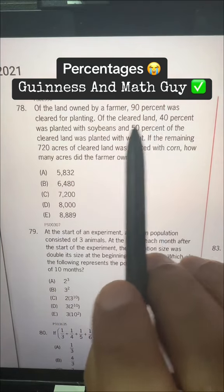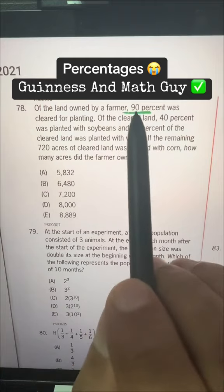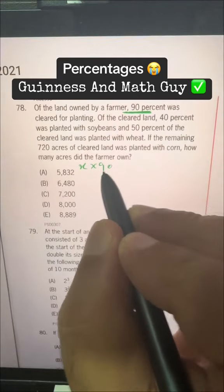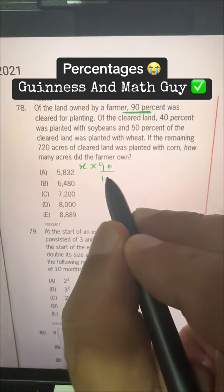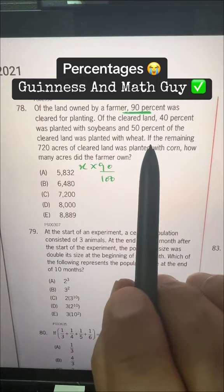So, 40 plus 50, 90% of the cleared land, that is also 90% of the total land. So, let's say total land is X and 90% of that is this one. And what she is asking,